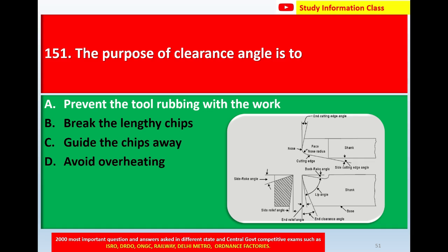This is the diagram of a single point cutting tool — the nomenclature. The purpose of the clearance angle is to prevent the tool rubbing with the workpiece. Here we have the rake angles, the back rake angle, the lip angle, the shank, the base, the side relief angle, the nose, the end cutting edge angles, the face, and the nose radius. The correct answer for question 151 is option A: prevent the tool rubbing with the work.